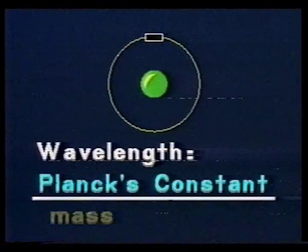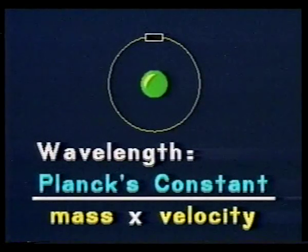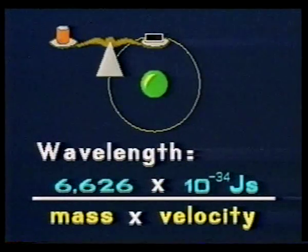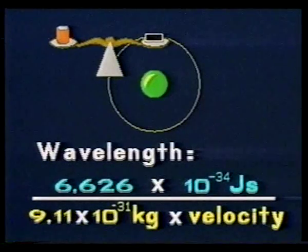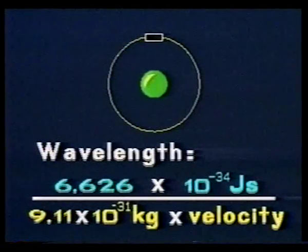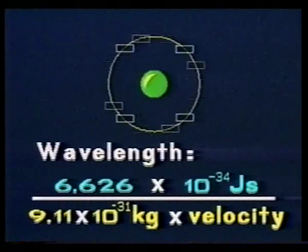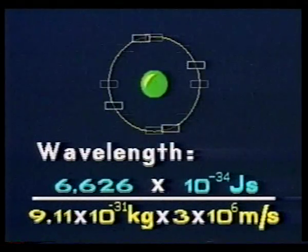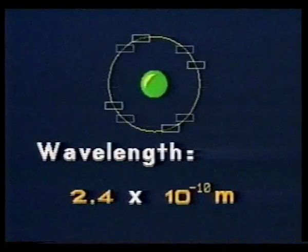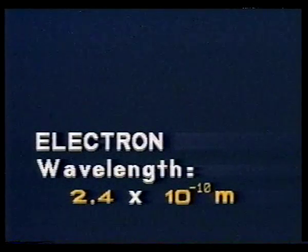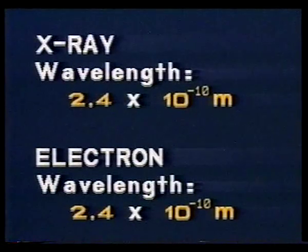Consider one of the smallest particles: an electron. What might its de Broglie wavelength be if its mass is 9.1 × 10⁻³¹ kilograms and it travels at 3 × 10⁶ meters per second? Although this wavelength seems small, it's no smaller than that of an X-ray. We can demonstrate the wave nature of X-rays by using, of all things, a crystal of salt.